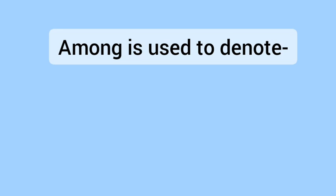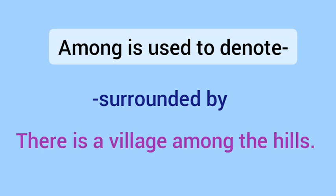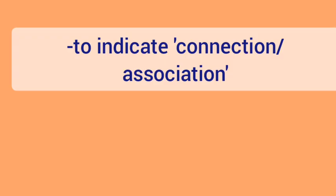Among is also used to denote 'surrounded by'. For example: 'There is a village among the hills.' — जो village है वो hills से surrounded है, यानि उसके आसपास hills हैं। It is also used to indicate connection or association.